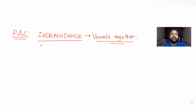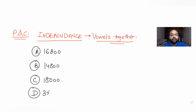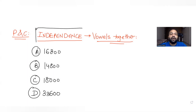There are four options given to us: 16,800; 14,800; 18,000; and 33,600. We need to figure out which one of these four options is the correct answer for the question given to us.